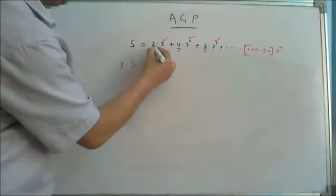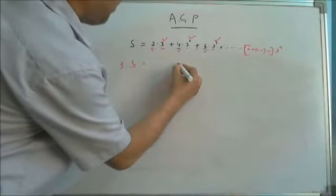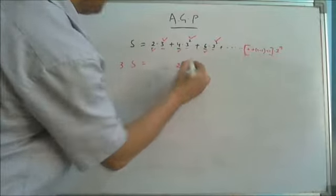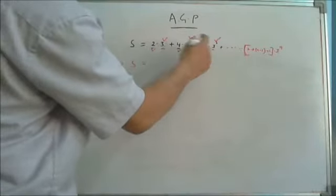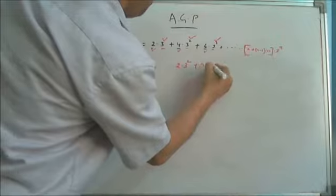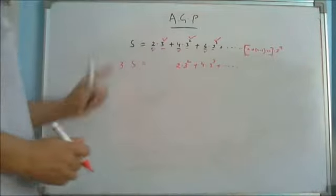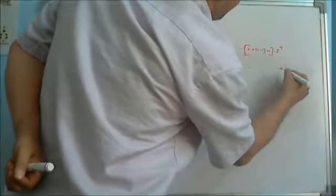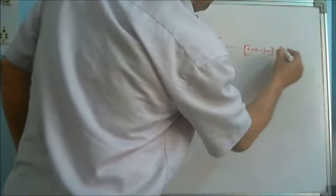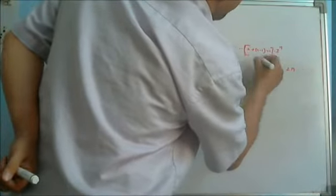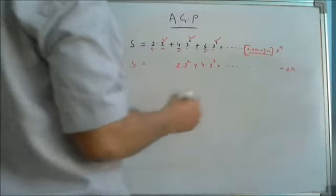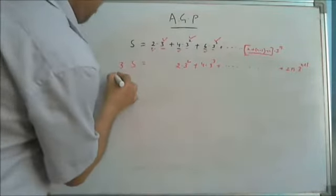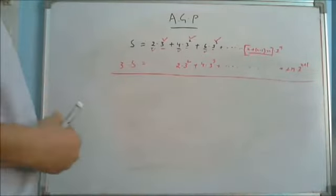For multiplying this with 3, the first term is coming out to be 2×3², which I am writing leaving one place. So it is coming out to be 2×3². When the second term is multiplied with 3, it is coming out to be 4×3³. Like that. And as I have left one place here, I have to move one place extra, so the nth term is 2n×3ⁿ. Solving it, 2n×3ⁿ×3 = 2n×3ⁿ⁺¹.